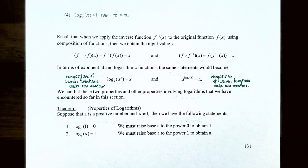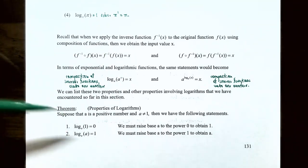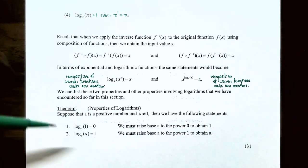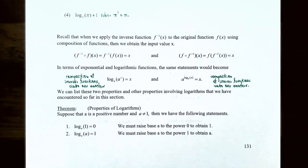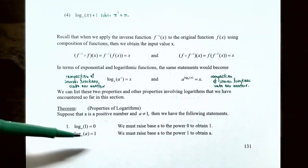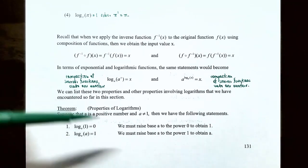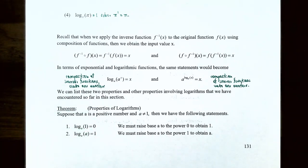We can now list the properties of logarithms. Given base a > 0, a ≠ 1: (1) log_a(1) = 0, because a⁰ = 1 for any valid base. (2) log_a(a) = 1, because a¹ = a — when the base equals the argument, the logarithm equals 1.